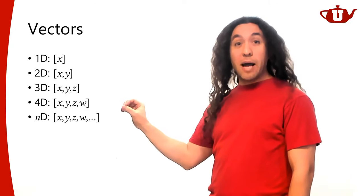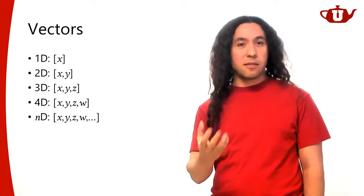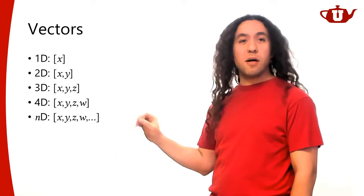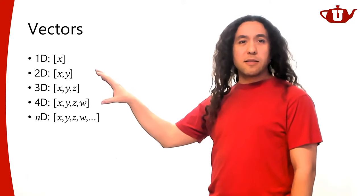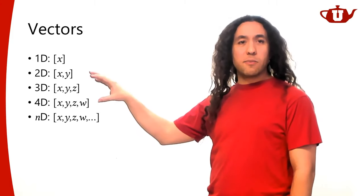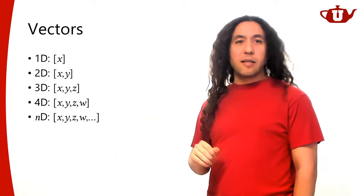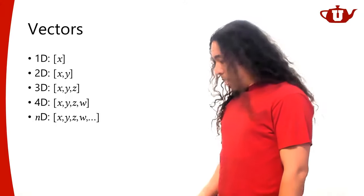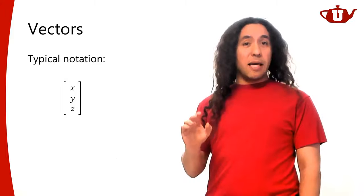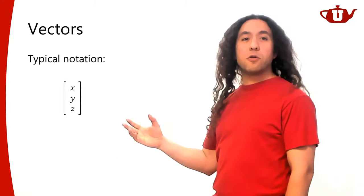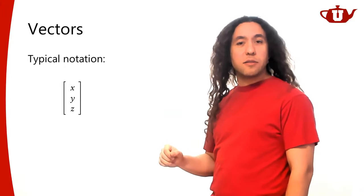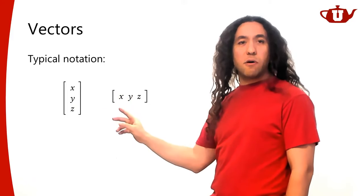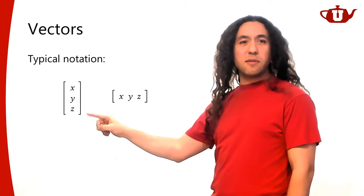In computer graphics, the vectors we're most interested in are 2D, 3D, and 4D — those are the ones we'll use very frequently. nD vectors are used in certain special cases but not extensively everywhere. The 3D one is going to be the most important. Typically when we write vectors, we prefer using column notation rather than row notation.